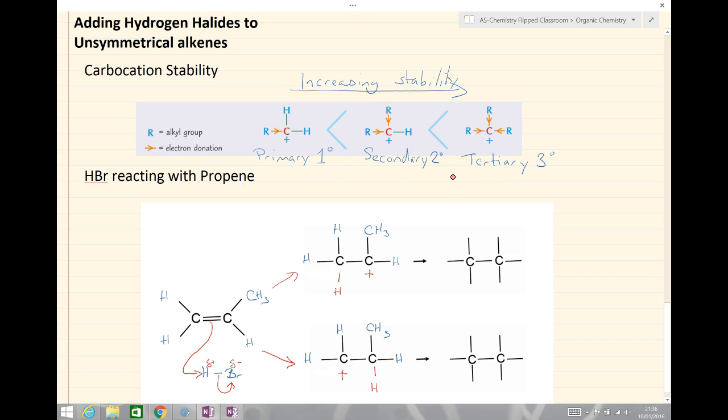We can see here that on this top example, this carbocation has got one, two carbons, two alkyl groups. So this one at the top is a secondary carbocation, while the one at the bottom here, this carbocation is only attached to one methyl group or one alkyl group and two hydrogens, and therefore, the one on the bottom here is a primary carbocation.